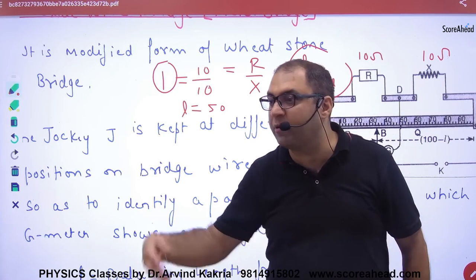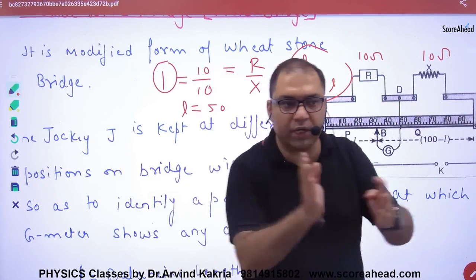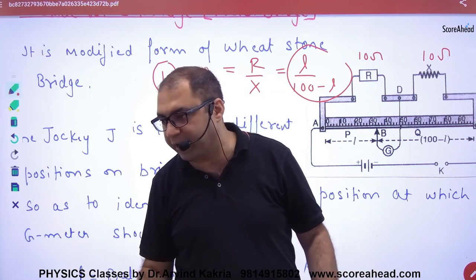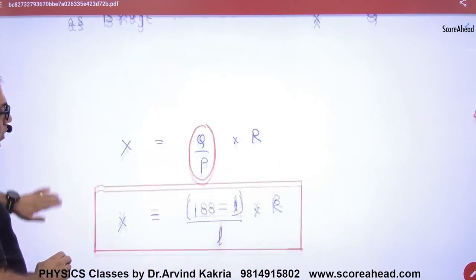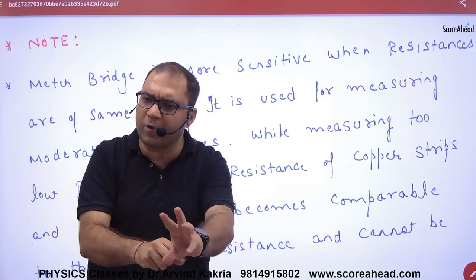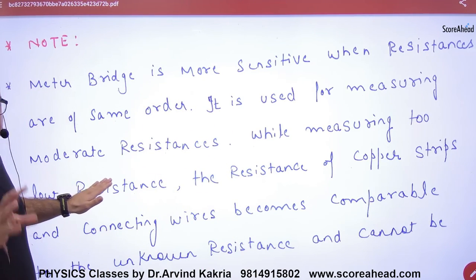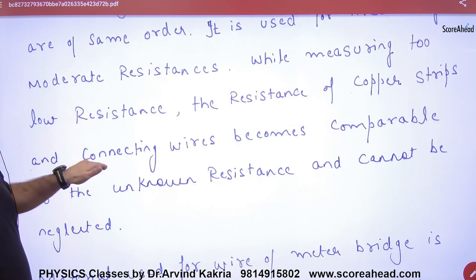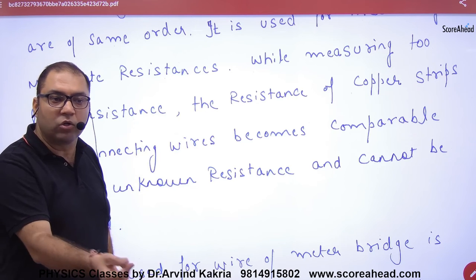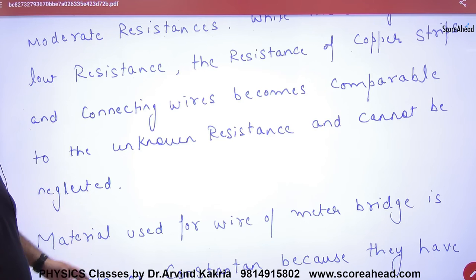If resistance values are very small (like 0.5 ohm), the neglected end resistances become comparable, giving inaccurate results. The meter bridge is therefore used for measuring moderate resistances — not too high, not too low. While measuring very low resistance, the resistance of copper strips and connecting wires becomes comparable, so neglecting them leads to significant error in the unknown resistance.